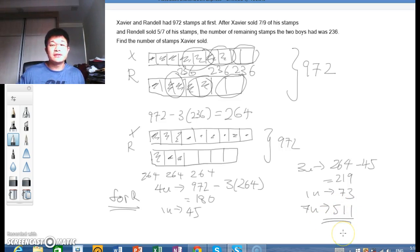So there you have it. Xavier sold 511 stamps. Subscribe to our YouTube channel. Hit the subscribe button. Visit us at our webpage, juniorwonders.com.sg. This is Wei Chiang here. Look forward to hearing from you soon. Thank you and goodbye.